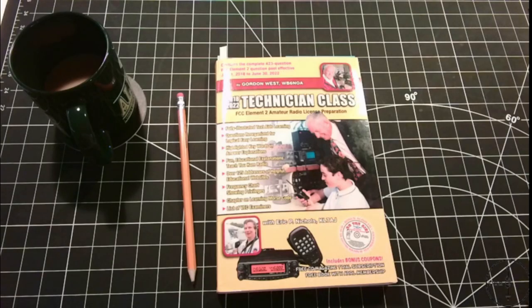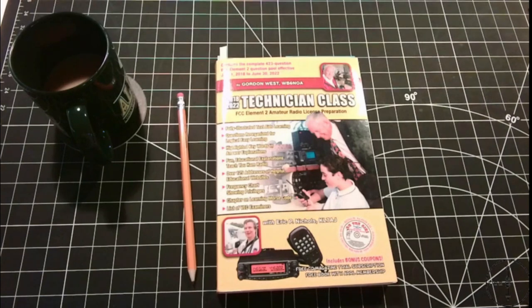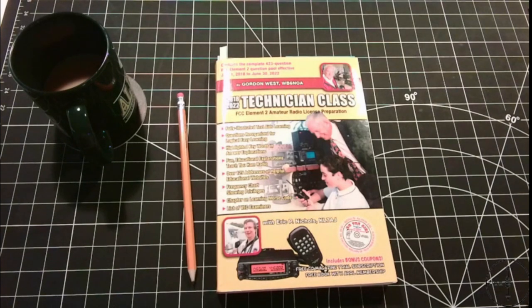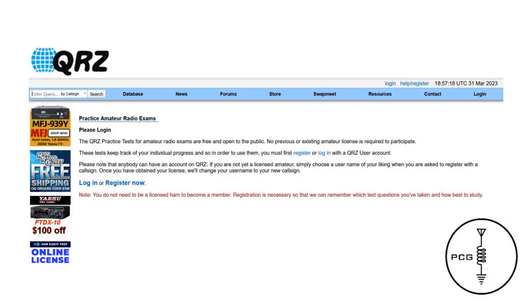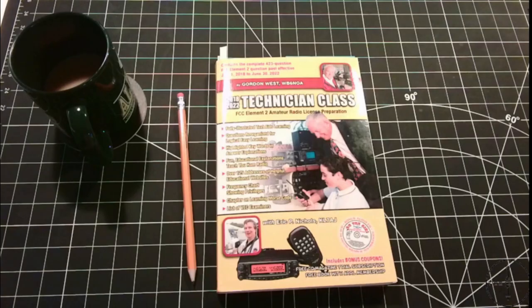Whether you purchase the Gordon West study guide or download the question pool from the ARRL, I would recommend checking out a website called qrz.com. This website has practice tests for amateur radio exams and it's free to the public. The online practice tests draw from the same question pool as the Gordon West study guide and the ARRL. One of the features I like is you can track your progress, and once you begin to consistently achieve 85% passing on the practice tests, you should be about ready to take the exam.